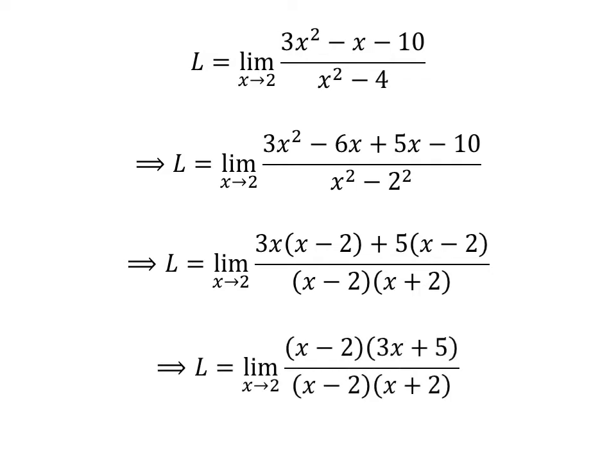Now let us take out the common factor (x minus 2) in the numerator. So the numerator becomes (x minus 2)(3x plus 5).